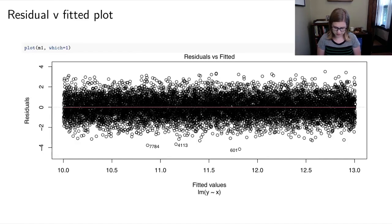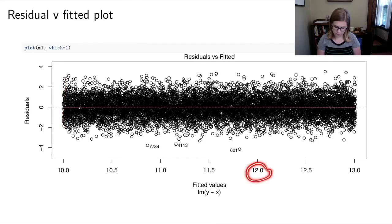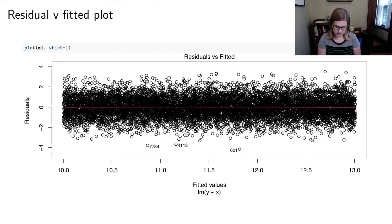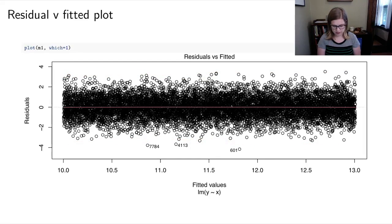The fitted values are the model's predictions. For a given fitted value, there will be some observations with negative residuals and some with positive residuals. When looking at the residual versus fitted plot, one key thing to look for is that the band of residuals is the same width all the way across — uniform spread. It looks really nice here, so this plot looks good.